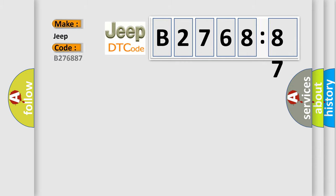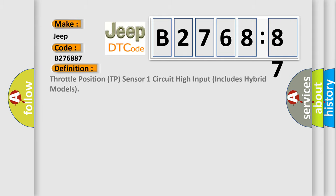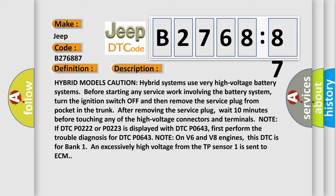The number itself does not make sense to us if we cannot assign information about it to what it actually expresses. So, what does the diagnostic trouble code B276887 interpret specifically for Jeep car manufacturers? The basic definition is: Throttle position TP sensor one circuit high input includes hybrid models.